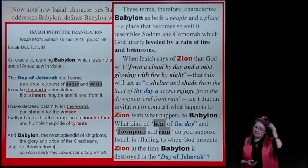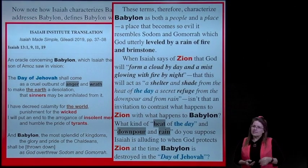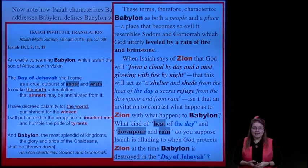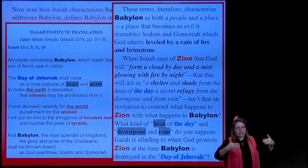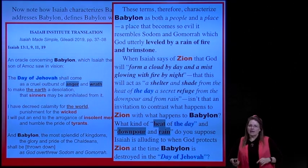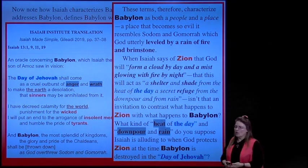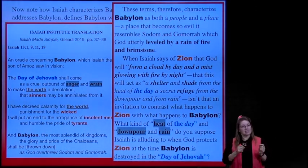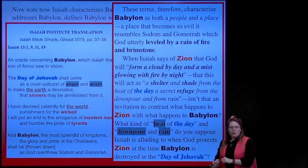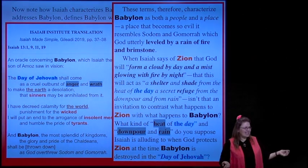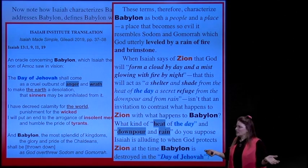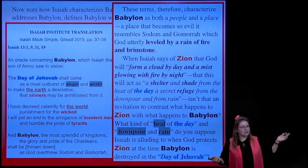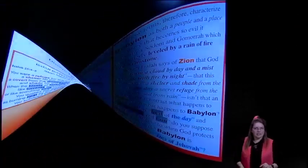Think—any scriptures about hail and fire? When Isaiah says of Zion that God will form a cloud by day and a mist glowing with fire by night, that this will act as a shelter and a shade from the heat of the day, a secret refuge from the downpour and from the rain—isn't that an invitation to contrast what happens to Zion with what happens to Babylon? What kind of heat and downpour and rain is Isaiah alluding to when God protects Zion at the same time Babylon is destroyed in the day of the Lord?